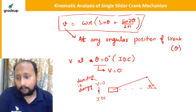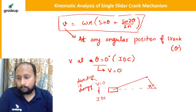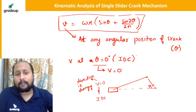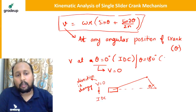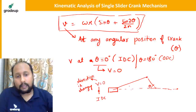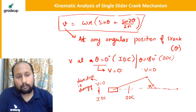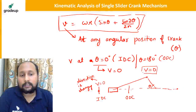The same applies at theta = 180° (ODC). At the outer dead center, the crank is in the opposite extreme position and the piston is again at rest, because the direction is changing. Both extreme ends of the slider have zero velocity.